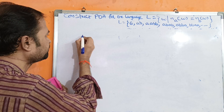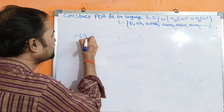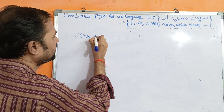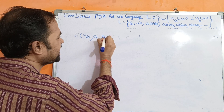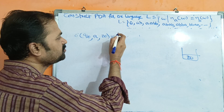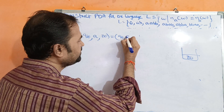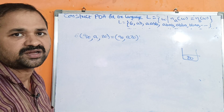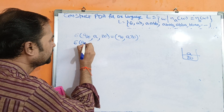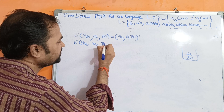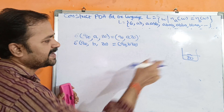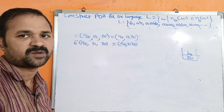Let us see the first two transition functions. δ(Q0, A, Z0) — initially at state Q0, input symbol is A, and the stack is empty (Z0 on top). We perform the push operation, giving (Q0, A Z0). Similarly, δ(Q0, B, Z0) — input symbol is B, stack is empty, so perform the push operation: (Q0, B Z0).